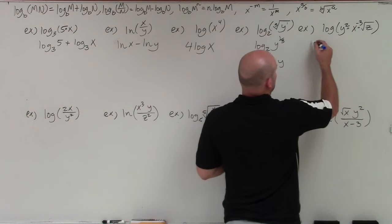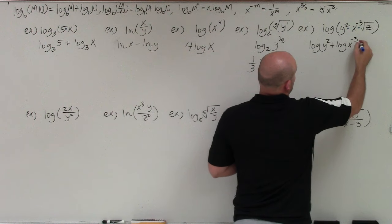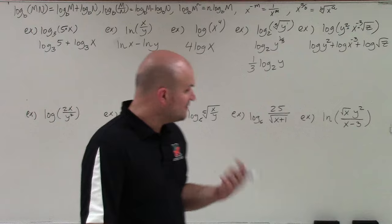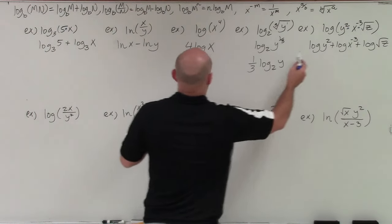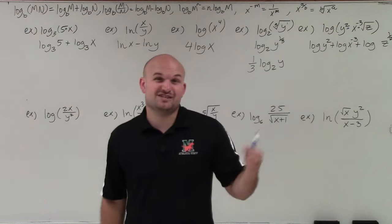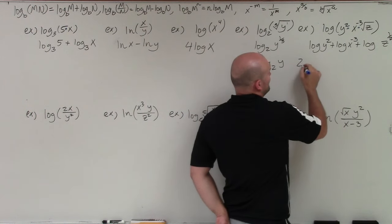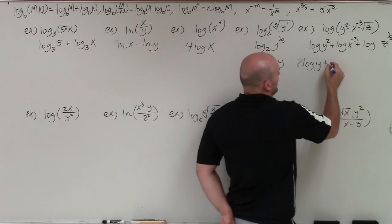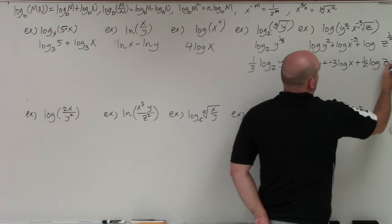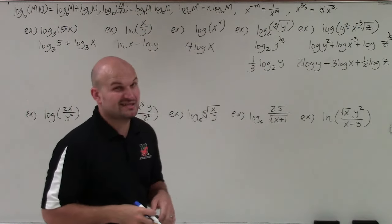Breaking up each one, I get log of y squared plus log of x to the negative 3rd plus log of the square root of z. The square root of z can be rewritten as z to the 1/2. Now each logarithm has a power, and we want to bring those powers in front using the power rule. So I bring the 2 down, bring down the negative 3, and bring down the 1/2. A negative in front we just write as minus. That gives us the fully expanded form.